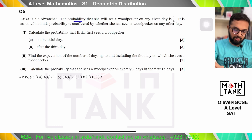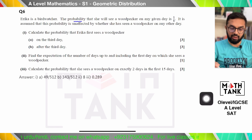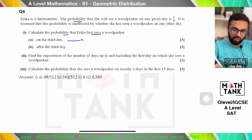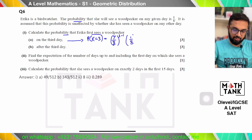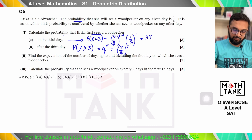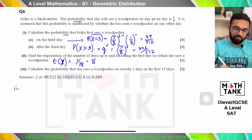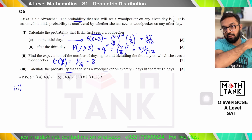Question 6. Erica is a bird watcher. The probability she will see a woodpecker on any given day is 1/8, and this probability is unaffected by other days. Calculate the probability that Erica sees the first woodpecker on the third day: P(X=3) = (7/8)^(3−1) × (1/8). After the third day, P(X>3) = q^3 = (7/8)^3 = 343/512. The expected number of days is 1/(1/8) = 8.